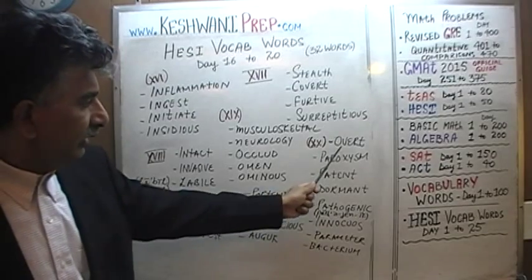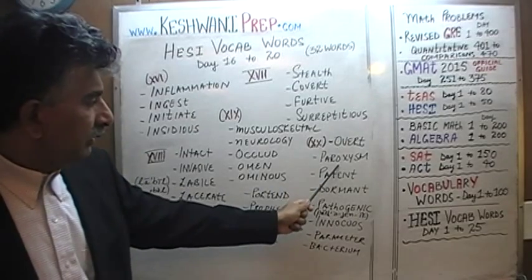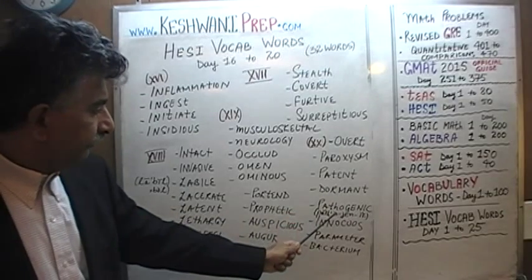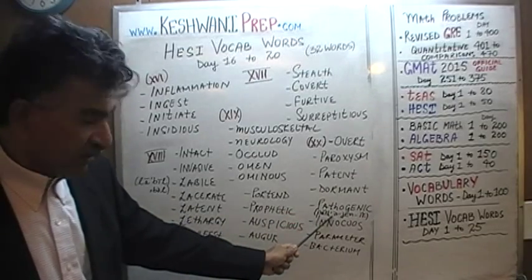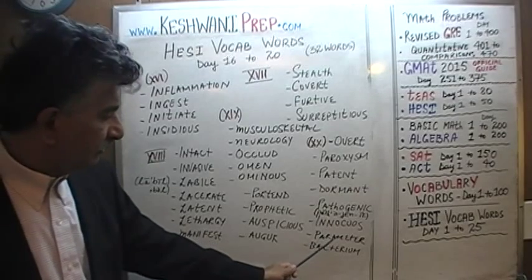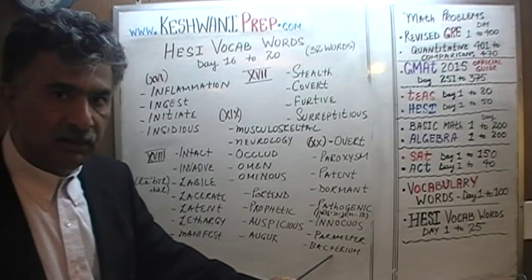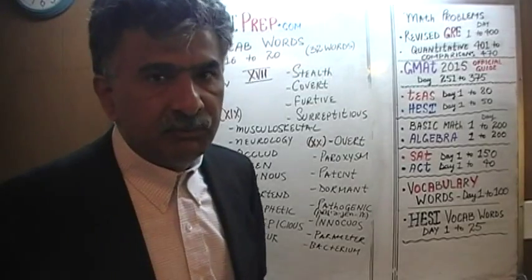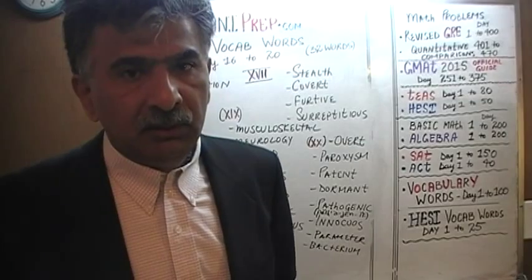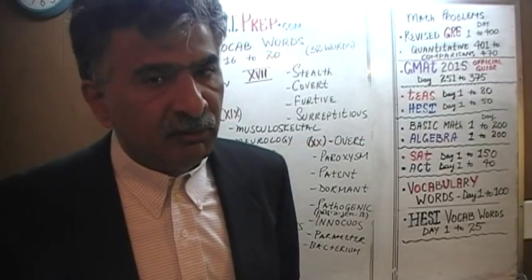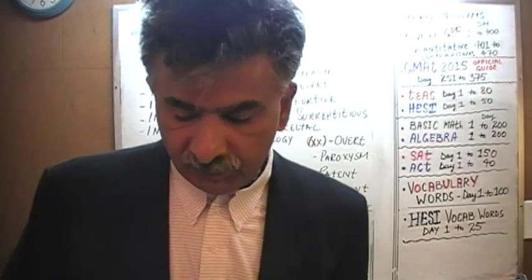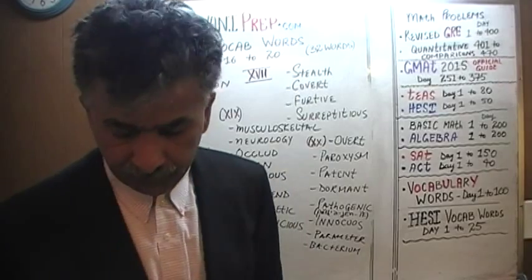Finally, day number 20 — the last day — we learned the word overt, praxism, patent, dormant, pathogenic, innocuous, parameter, and finally bacterium. It's a very simple word, and yet a lot of the time people make mistakes and they end up using the word bacteria when they mean to use it in a singular form. They say 'the only bacteria' — if it's the only one, it's bacterium. The singular of bacteria is bacterium. That was it.